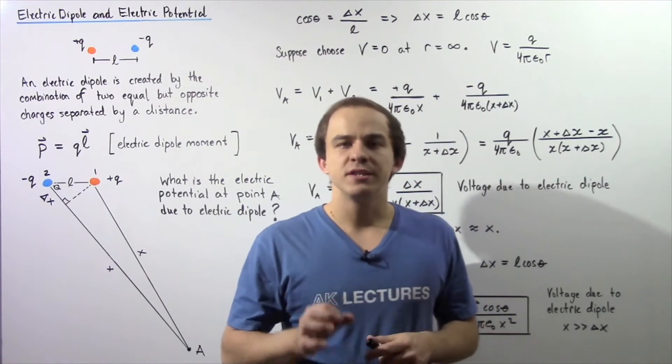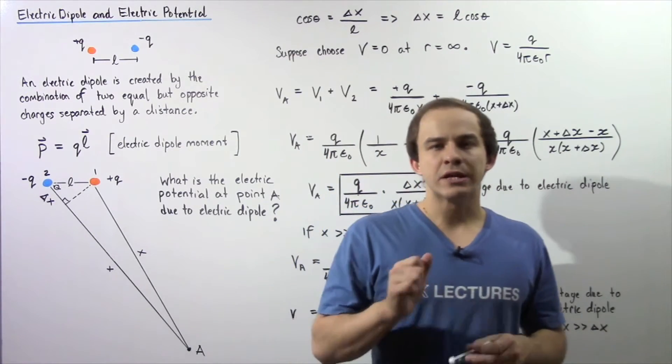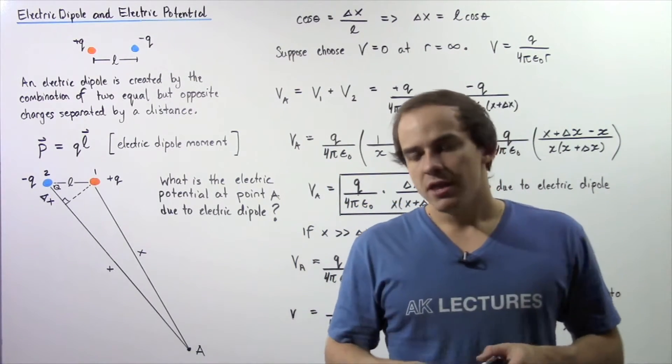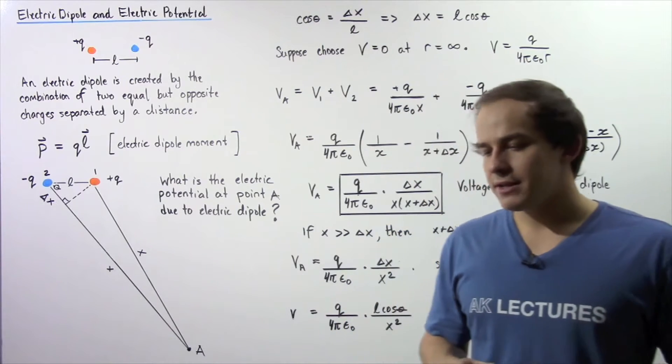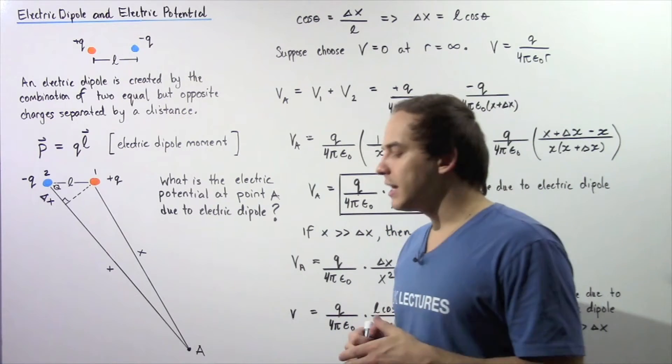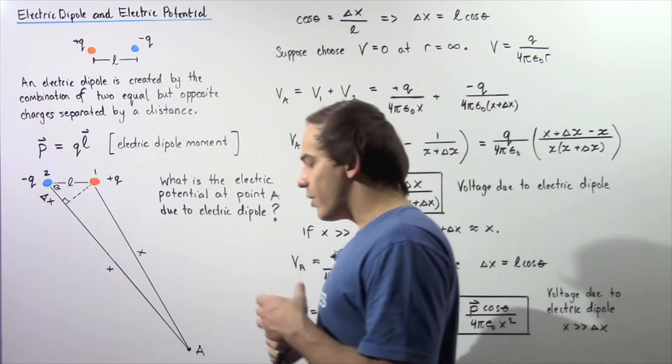In this lecture we're going to discuss the electric potential, the voltage, that is created as a result of an electric dipole.